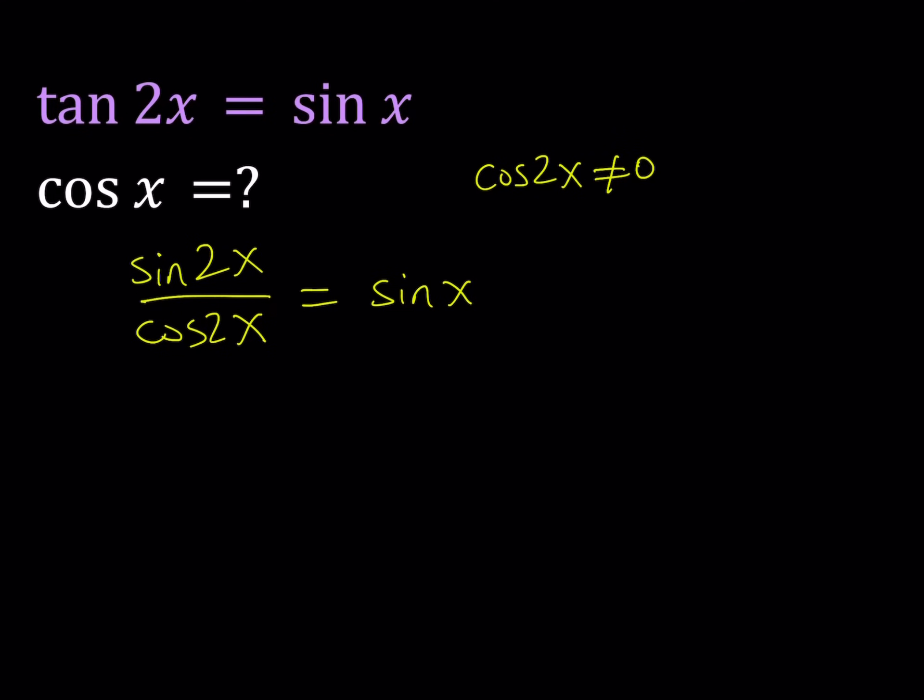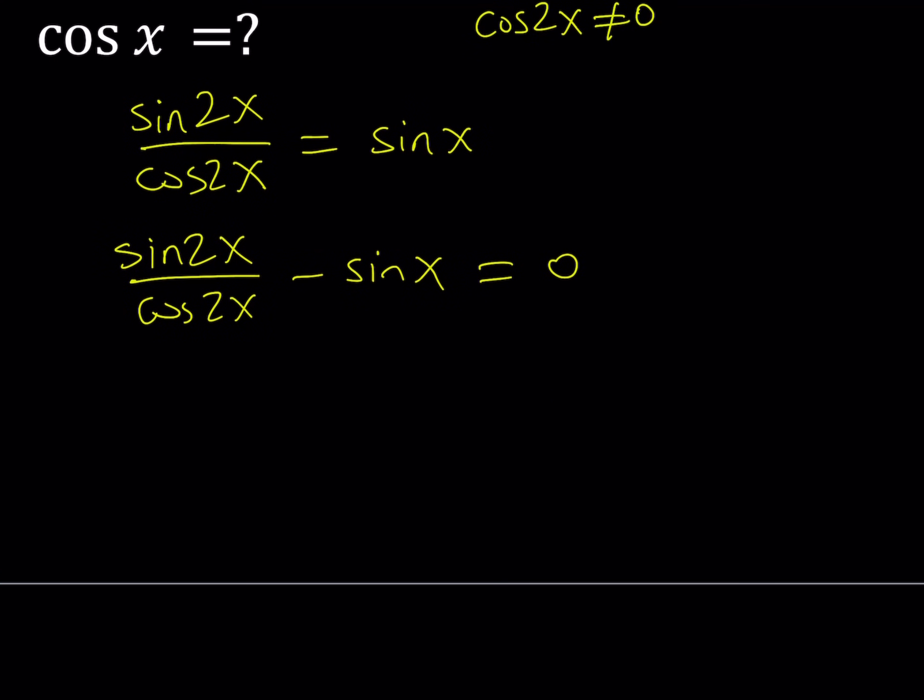Now, in an equation, you don't want to cancel out things because you may lose roots. But rather, you should put everything on the same side. So let's go ahead and do it. Sine 2x over cosine 2x minus sine x is equal to 0. And we're going to be solving this equation, not necessarily for x, but from here we need to find cosine of x.